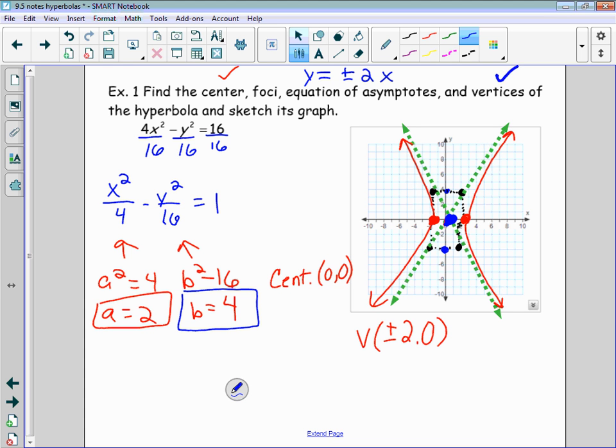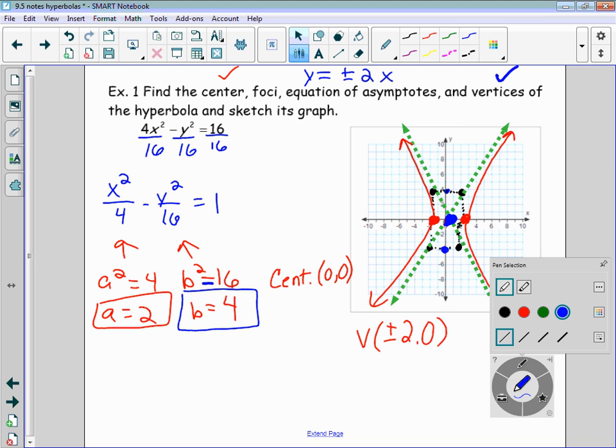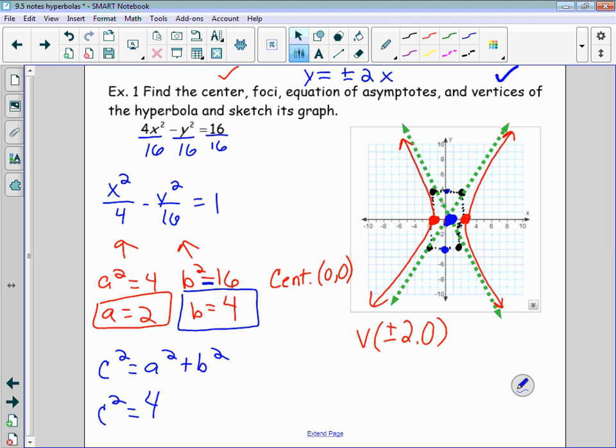it would be b/a. Remember slope rise over run. We found the vertices. We have not found the foci yet. To find the foci, what do we utilize? C. And how do we find C? Yes, we use the Pythagorean. So we know c² = a² + b² in this case.